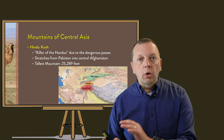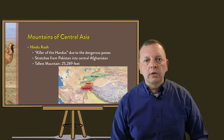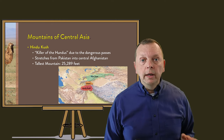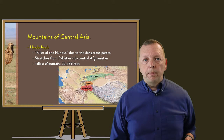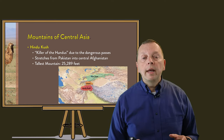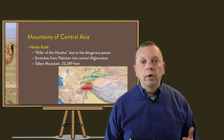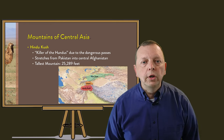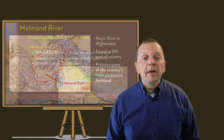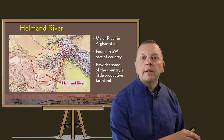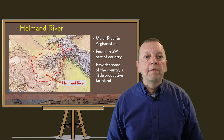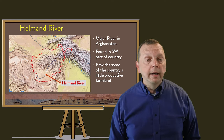The Hindu Kush Mountains start in Pakistan and stretch west into Afghanistan. The name Hindu Kush literally means 'killer of the Hindus,' due to the dangerous mountain passes found in this mountain range. Just like the Pamir Mountains, the Hindu Kush Mountains are also extremely tall, reaching over 25,000 feet in elevation. Also in Afghanistan, we find the Helmand River in the southwest portion of the country, whose banks create one of the few agricultural areas found there.